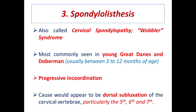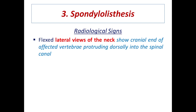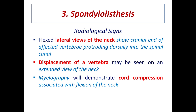When there is dorsal subluxation, the spinal cord will be pinched, causing clinical signs and progressive incoordination. Radiological signs include flexed lateral views of the neck showing the cranial end of the affected vertebrae protruding dorsally into the spinal cord. The displacement of the vertebrae may also be seen on an extended view of the neck. Myelography will demonstrate cord compression associated with flexion of the neck.